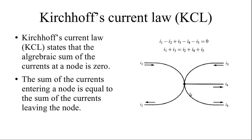Now we are going to see Kirchhoff's Current Law. This law states that the algebraic sum of the currents at a node is zero. The current entering and the current exiting — if you take the algebraic sum of all currents, it equals zero. Alternatively, you can state it as: the sum of currents entering the node equals the sum of currents exiting the node.